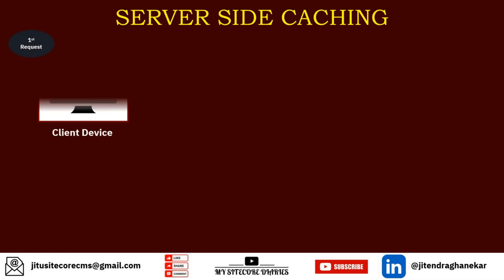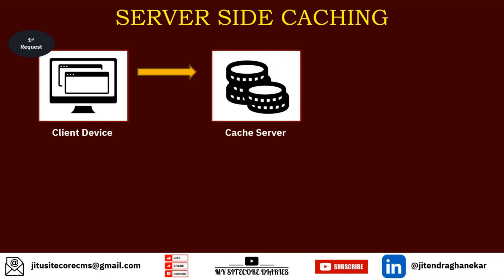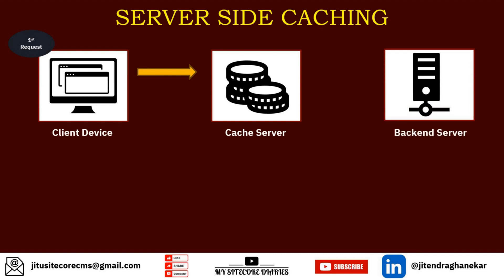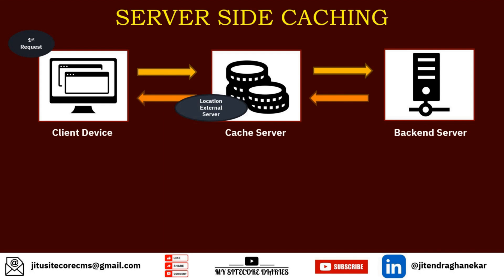Now, what is server-side caching? On the first request from your client device, you try to access the cache server. If the cache is not available, it will fetch the data from the backend server and store it into the cache server — an external location. This external location is outside your client device. This type of caching is called server-side caching, because the caches are not stored on your front-facing devices but on a separate server, which can be a CDN or an application server.